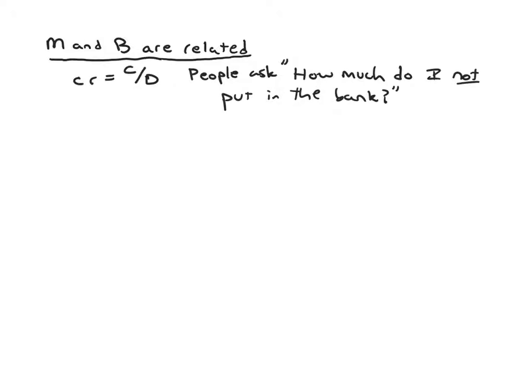Because this money multiplier process—the reason that the monetary base and M aren't equal—is because banks are able to do this fractional reserve banking. As a result, the important thing to think about is how much money is getting put into the banks. And C over D tells us how much is not being put into the banks. So that's one important definition. The next is what we call the reserve ratio or reserve deposit ratio. It's the ratio of reserves to deposits, and this is also exogenous. It's determined by banks. Banks ask themselves, what fraction do I want to keep on reserve?